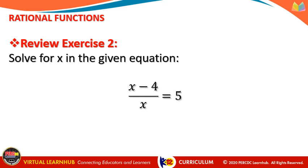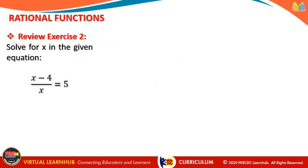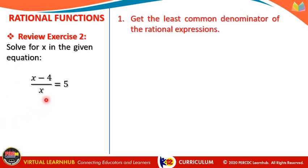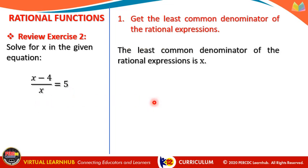For Review Exercise 2: solve for x in the equation (x − 4)/x = 5. Step 1 — the LCD of the rational expressions is x. Step 2 — multiply both sides by x: the x in the denominator cancels out, leaving x − 4 on the left side, and 5x on the right side.